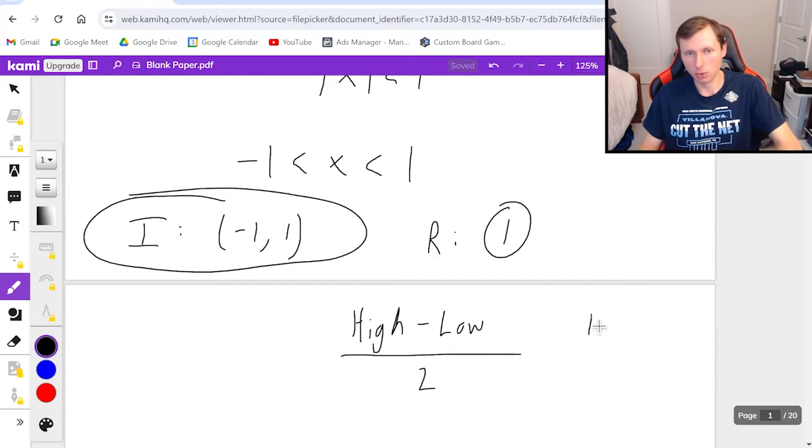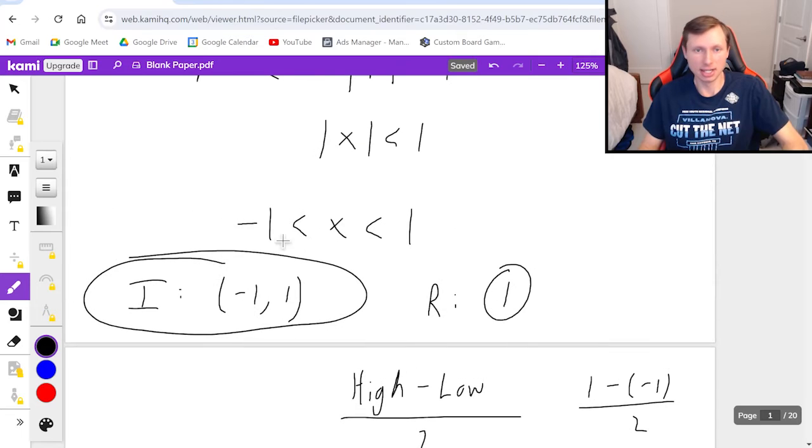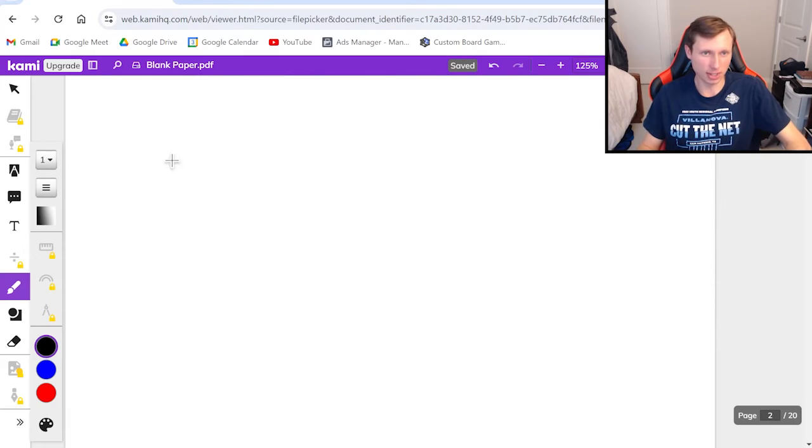And that's because the radius of convergence is always the high number minus the low number over 2. In other words, 1 minus negative 1 over 2, which gets you 1. Or you can get it faster just by saying this power series is centered at 0, because it's smack dab in the middle of negative 1 and 1, which means the radius will always be the number right here, in this case, 1. So that's it for the first one. Now let's do another one.